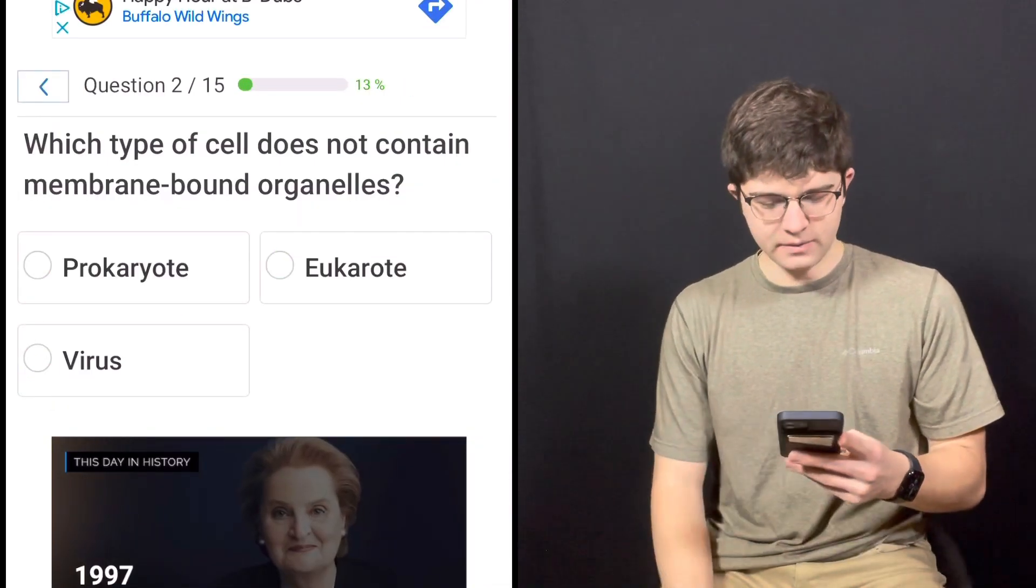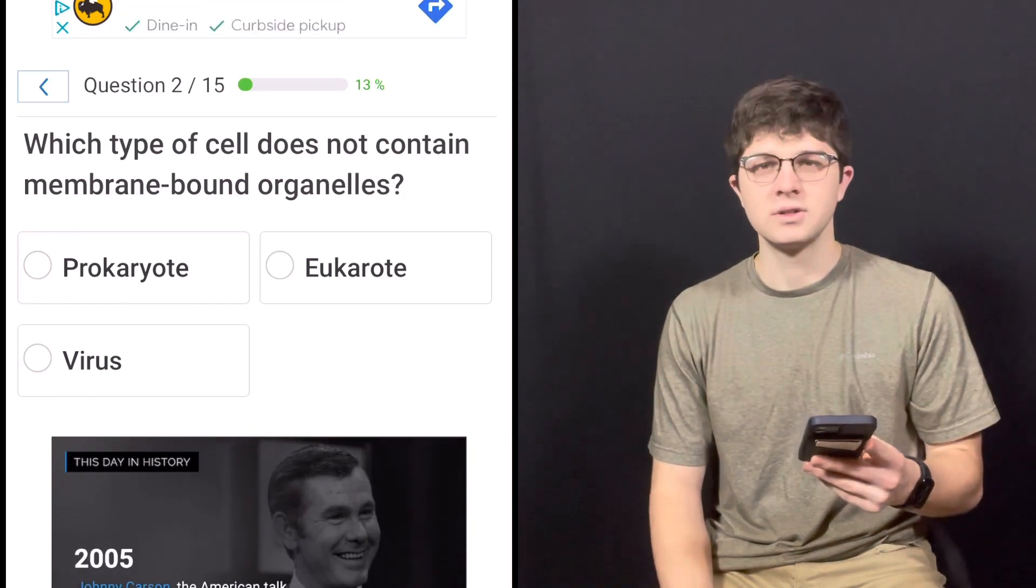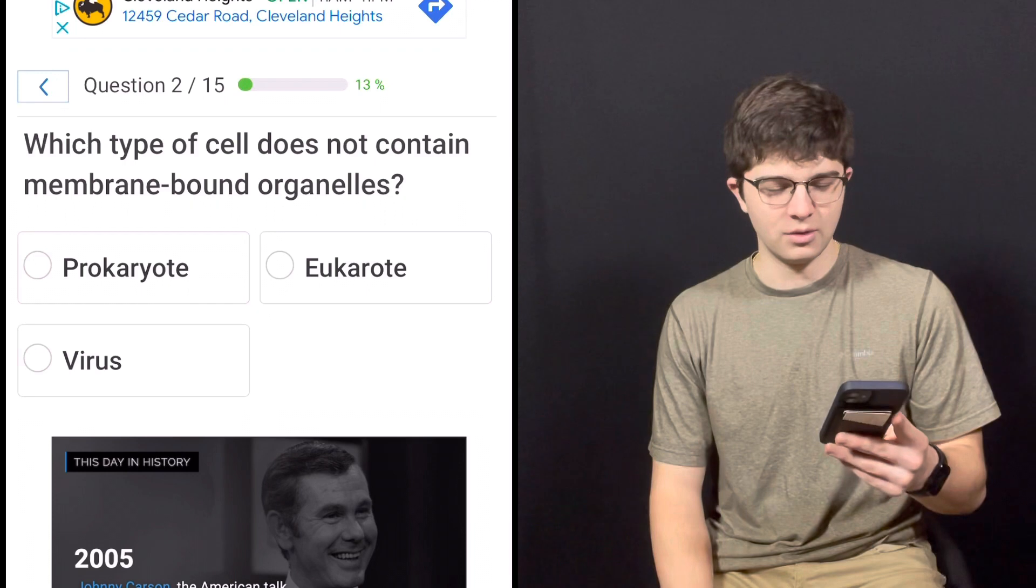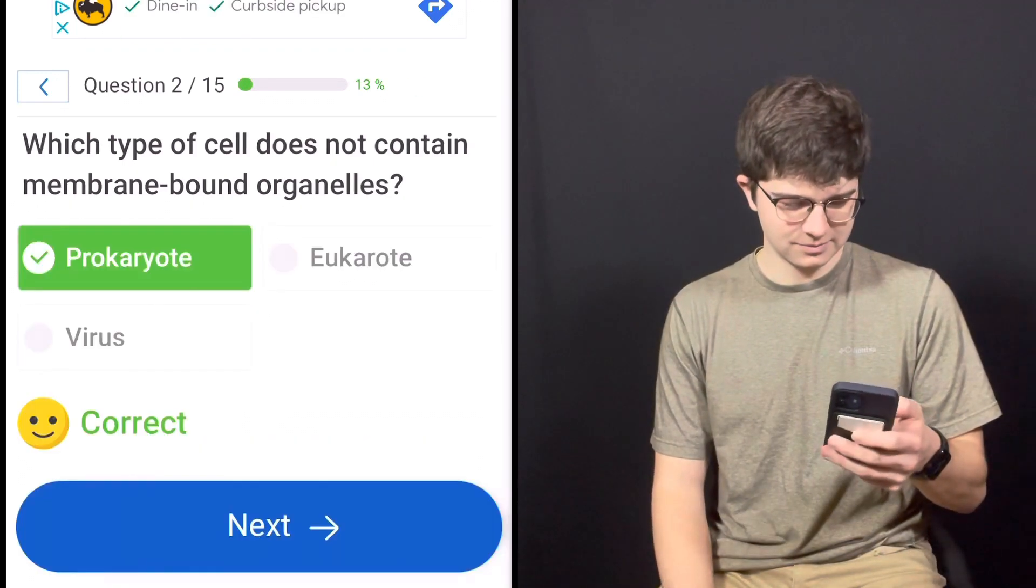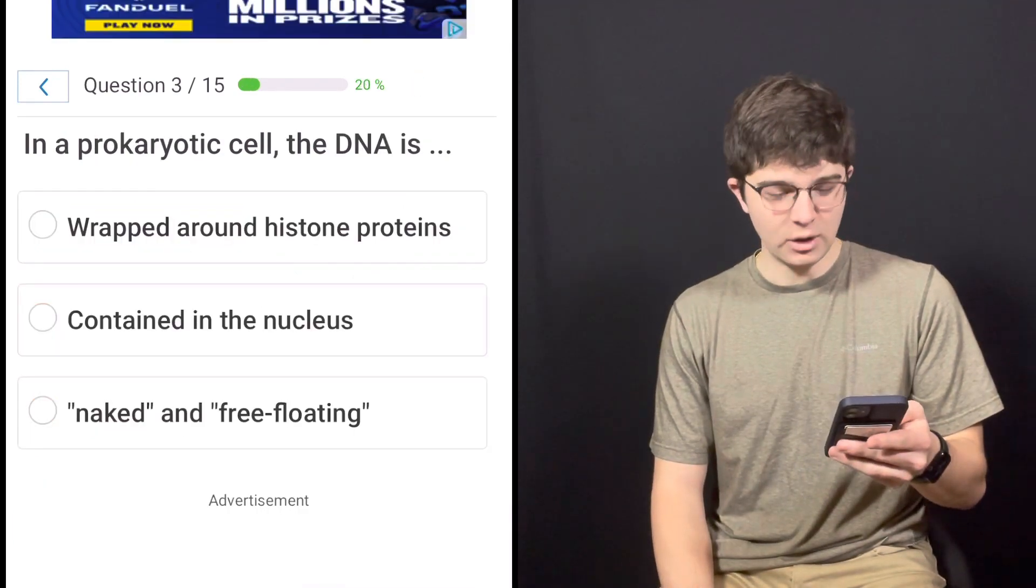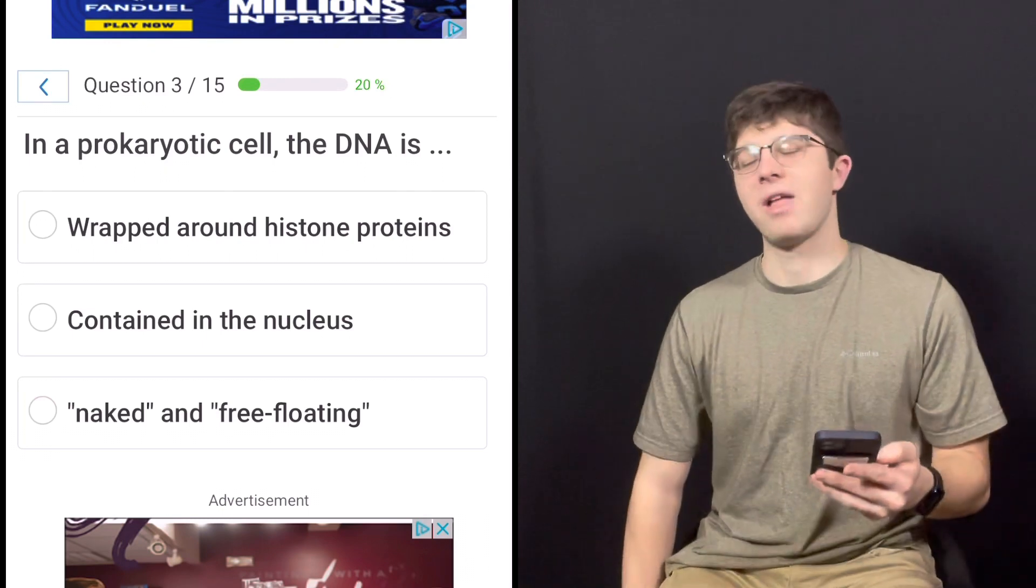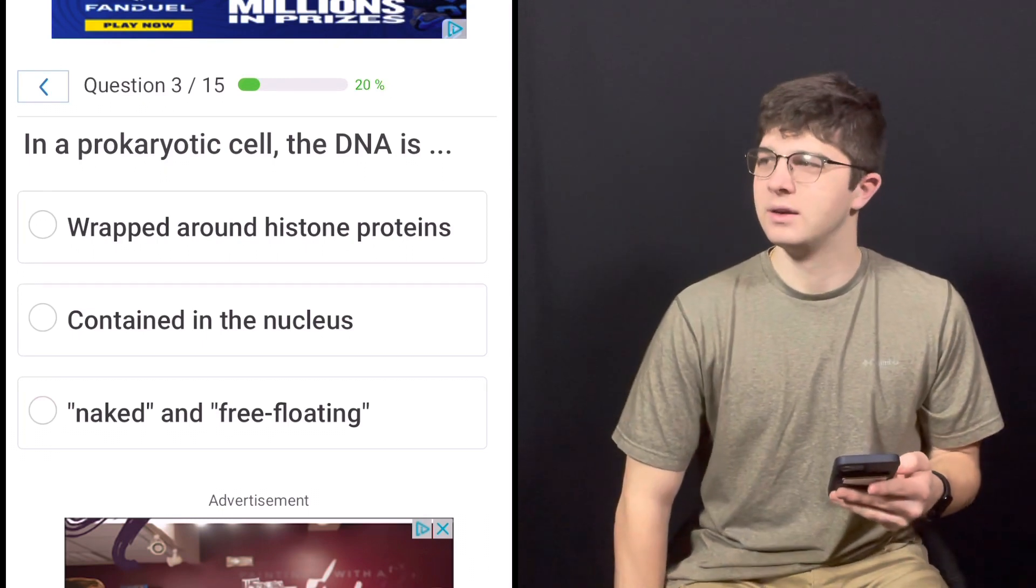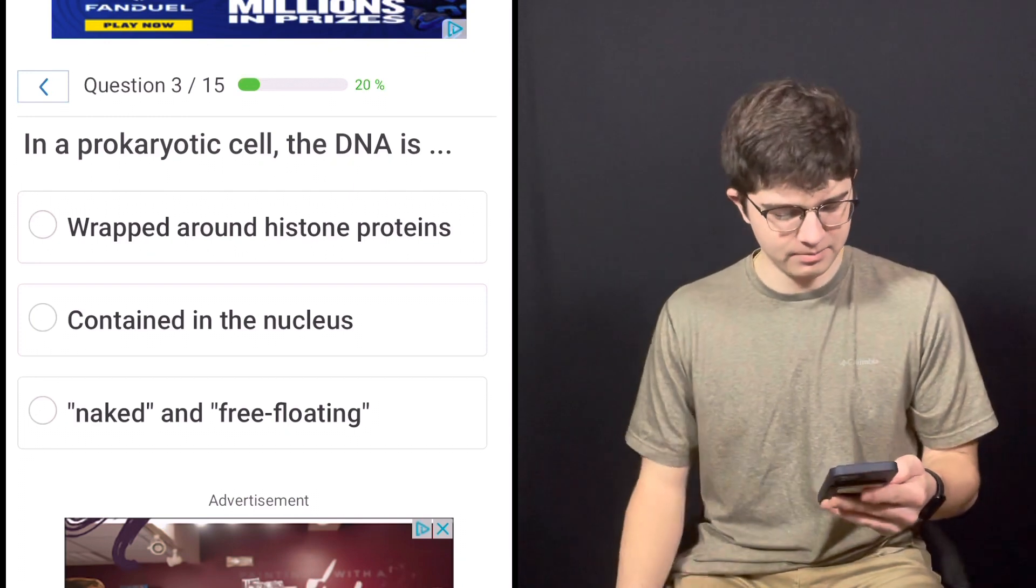Which type of cell does not contain membrane-bound organelles? Is it a prokaryote, a eukaryote, or a virus? It's a prokaryote. Prokaryote is correct. So they don't have a membrane? They don't have any membrane-bound organelles, like how we have mitochondria—that's like double membrane by itself. They have none of that.